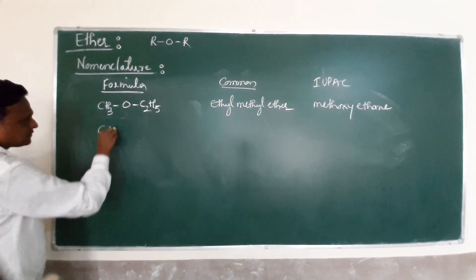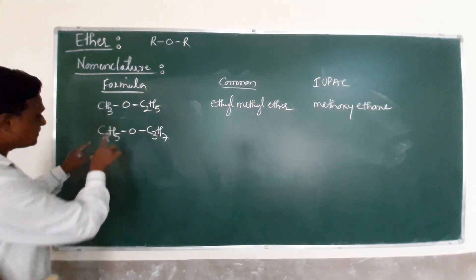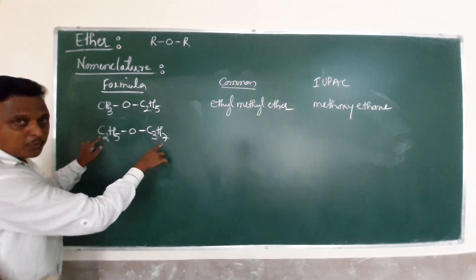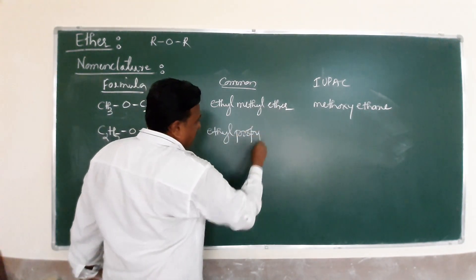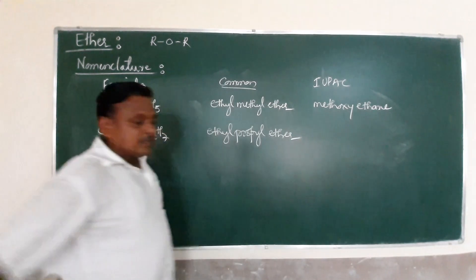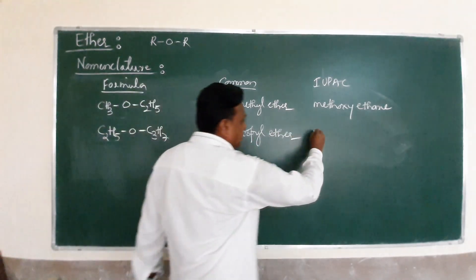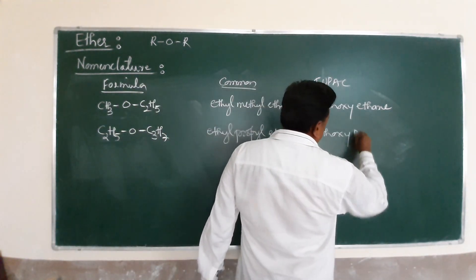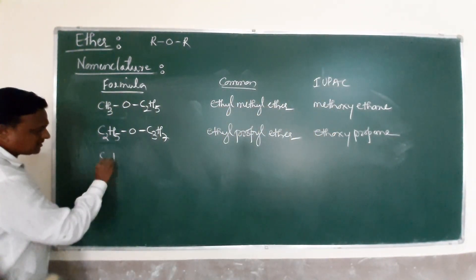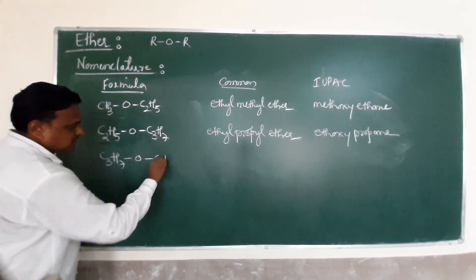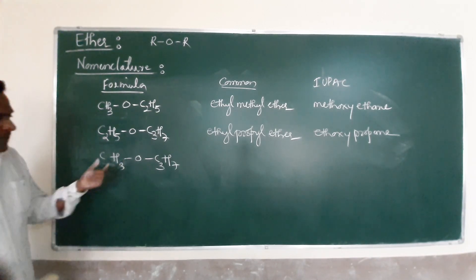Now we have another example: C2H5-O-C3H7. The common name is ethyl propyl ether. Both chains are different now. Ethyl and propyl - E comes before P alphabetically.